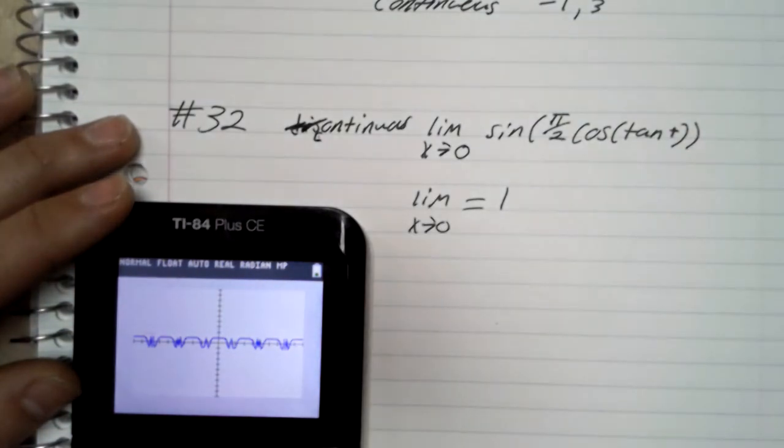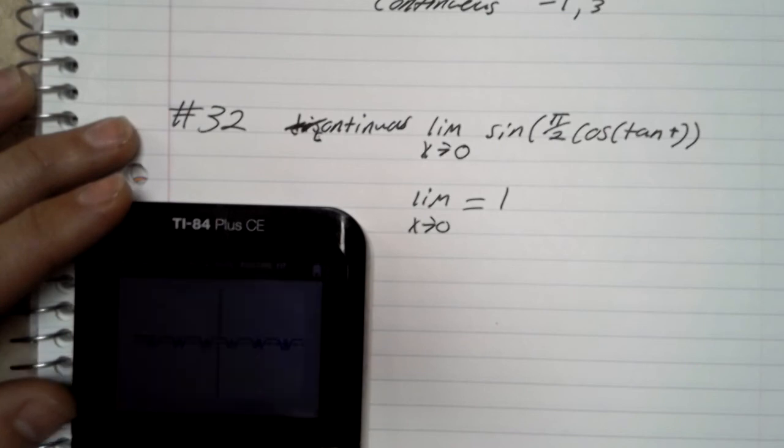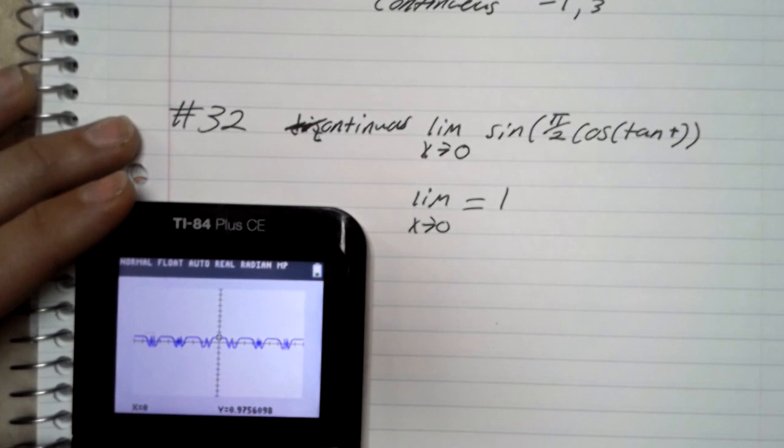And that would be, the tangent is the sine over the cosine, so anywhere where the cosine is zero, the tangent gives us a division by zero error. So I'm not sure if that is corresponding to jumps on the calculator, but there are points of discontinuity.